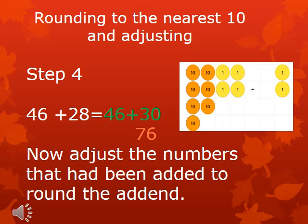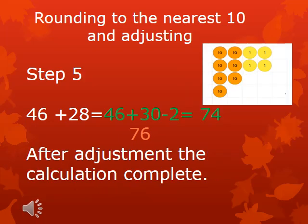Then, since we added two numbers extra to the original equation, we have to adjust by subtracting two from the final answer. Therefore 76 minus 2 is equal to 74.